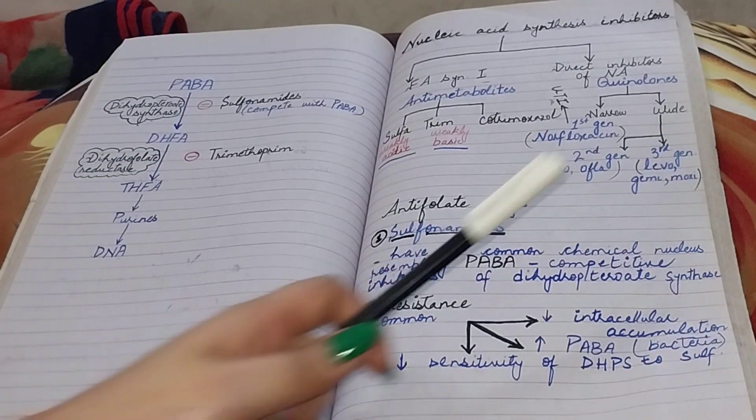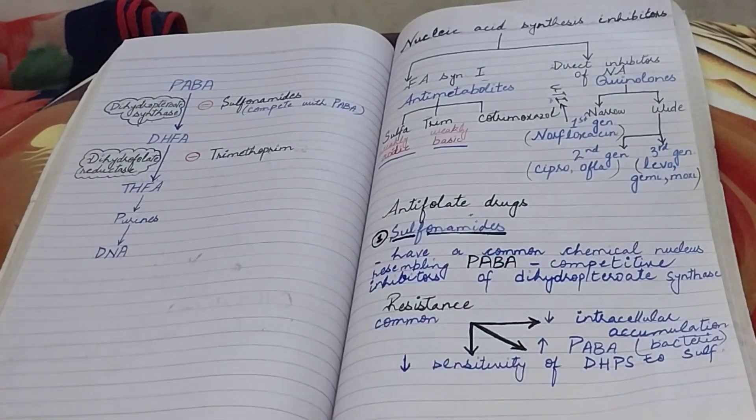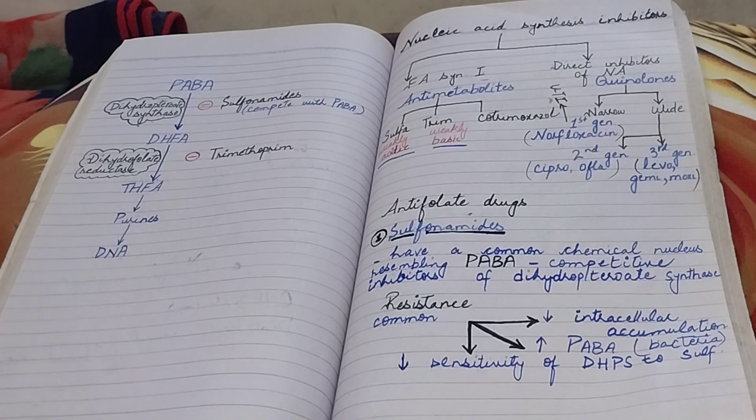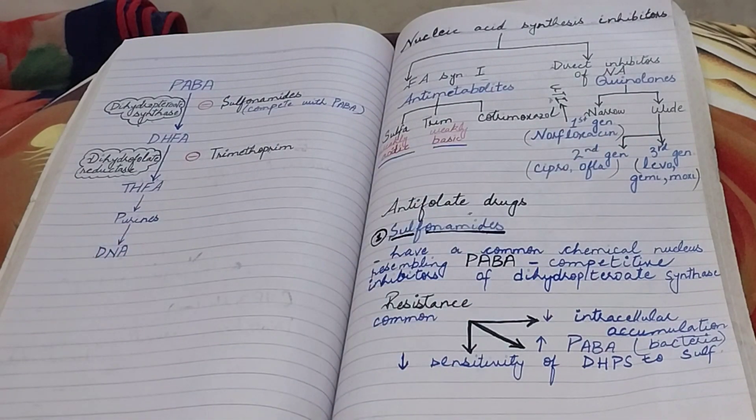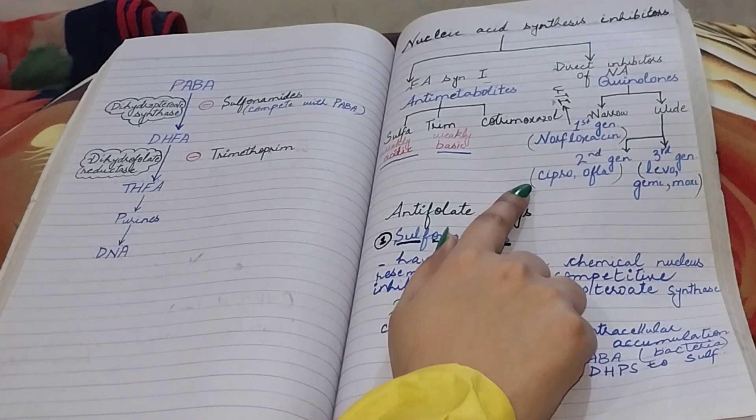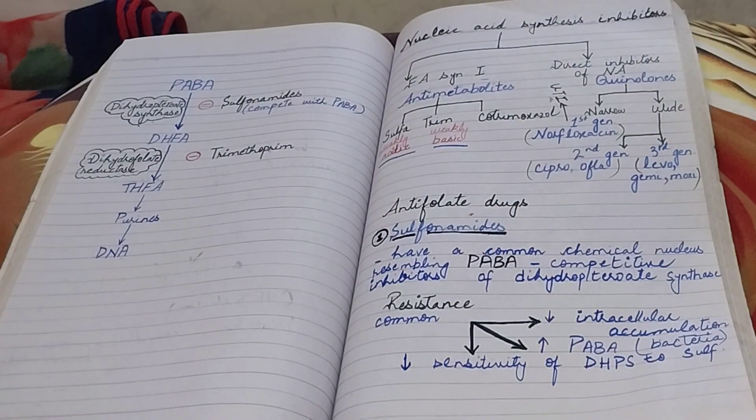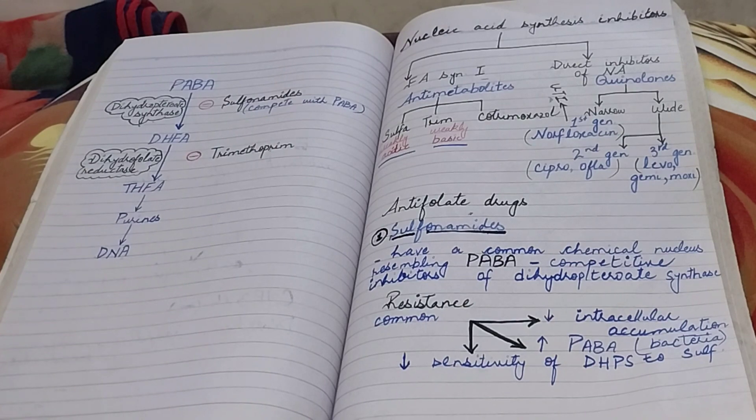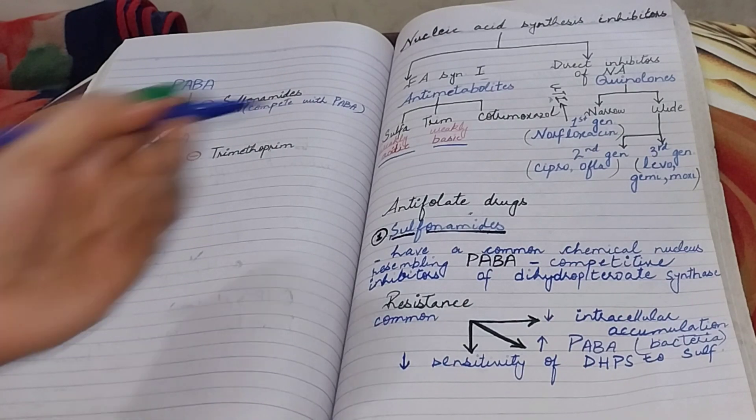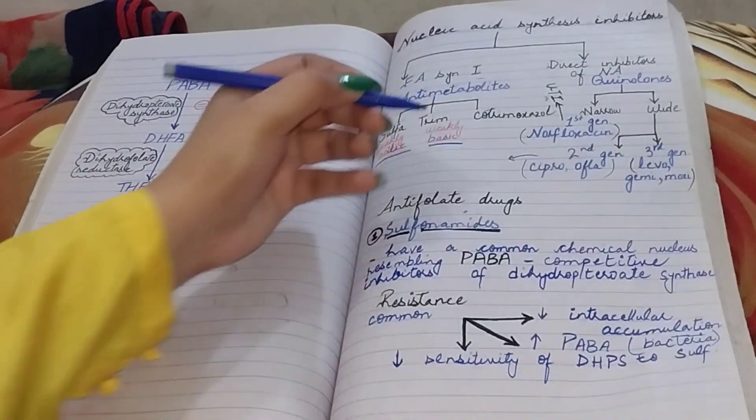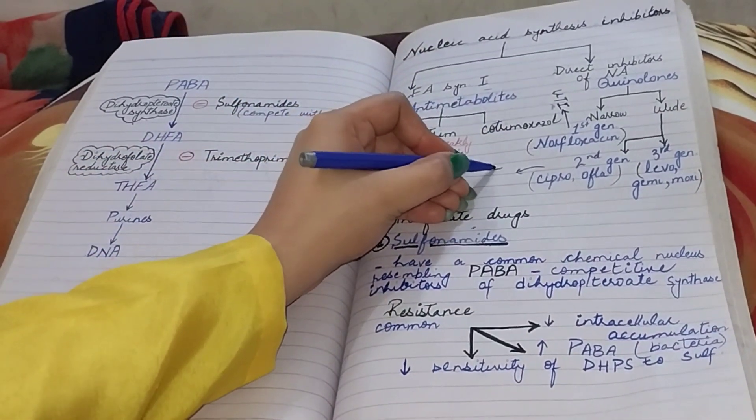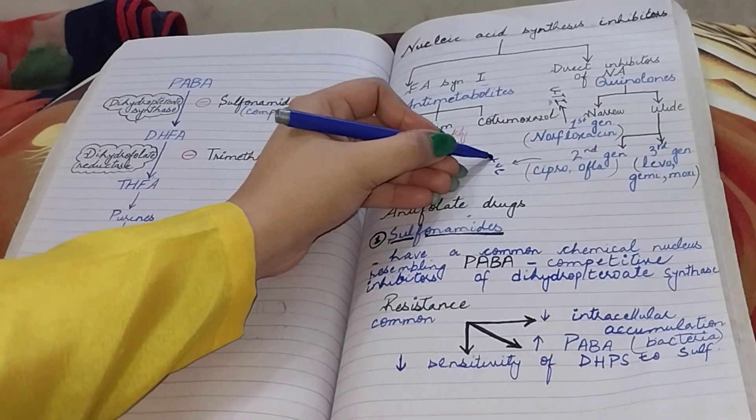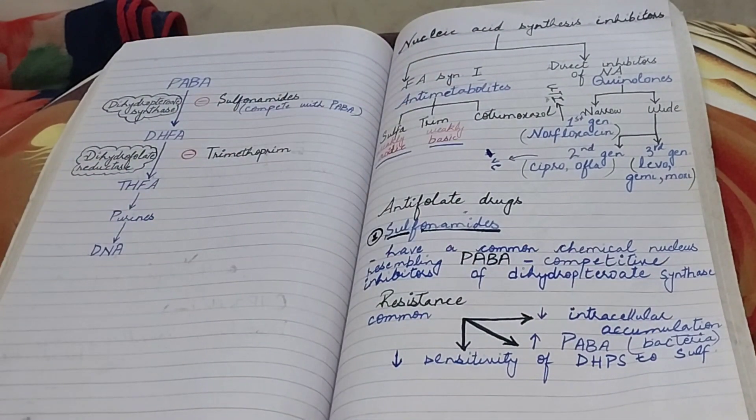Next we have second and third generation quinolones that are included into wide spectrum. The second generation quinolones contains ciprofloxacin and ofloxacin. Cipro and ofloxacin, they have greater activity against gram negative bacteria.